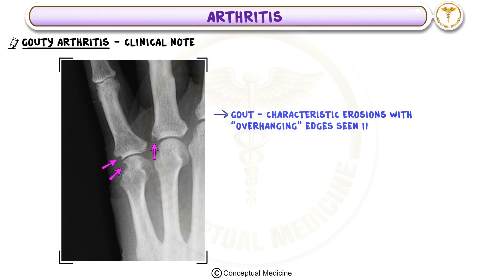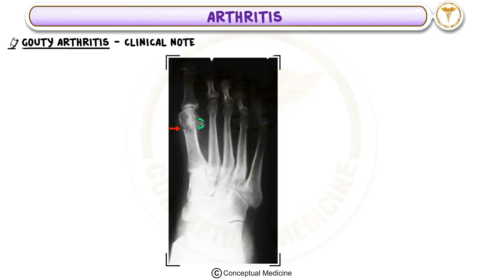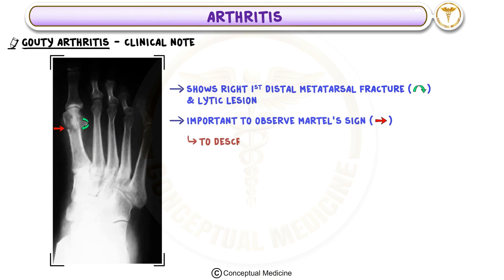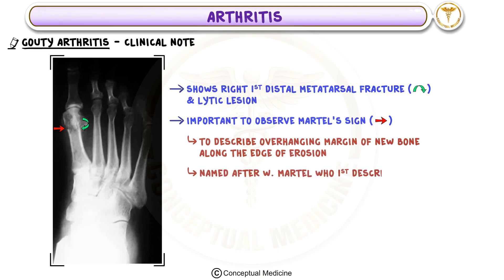Gout Radiographic Features: Characteristic erosions with overhanging edges seen in gout have been described as appearing like rat bites. The radiographic image shows a right first distal metatarsal fracture and a lytic lesion. The Martell sign describes the overhanging margin of new bone along the edge of erosion, named after W. Martell who first described this sign in 1968. It is important to note that the Martell sign is not present in all cases of gouty arthritis.